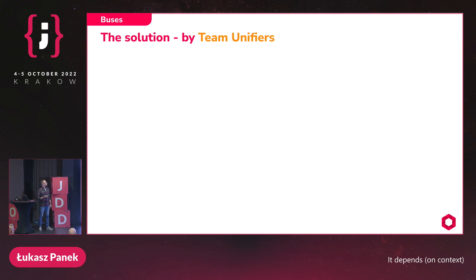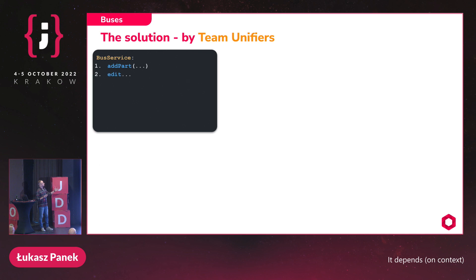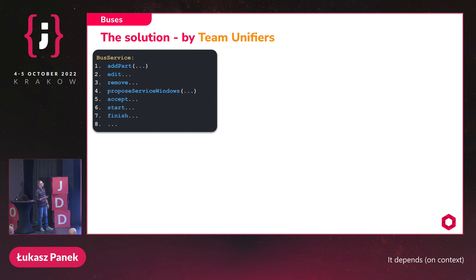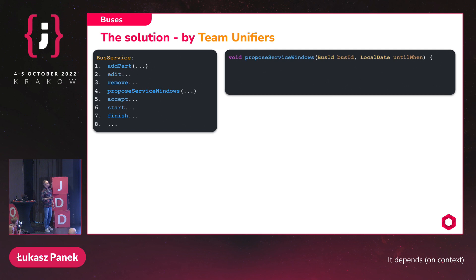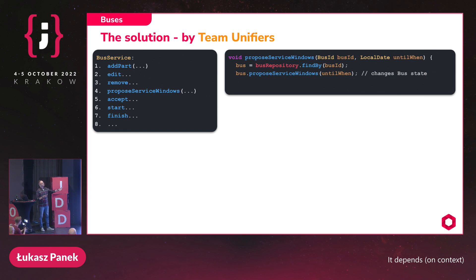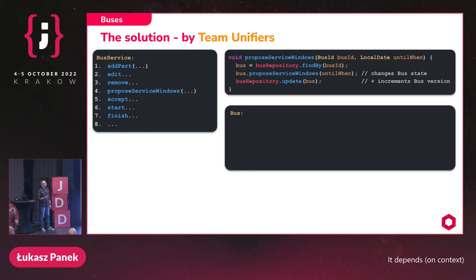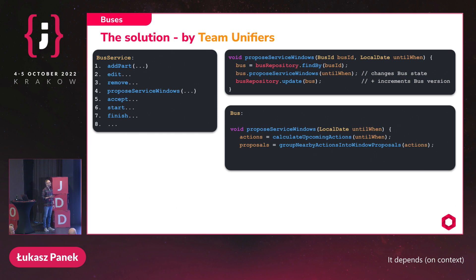The team created a Bus Service with methods mirroring those from the aggregate: add part, edit, remove, propose service windows, accept, start, finish, etc. Looking at the propose service windows method: first we load the bus from the repository, then invoke the command propose service windows — that command changes the bus's internal state — then we persist the change (which updates the version, where the optimistic lock exception can occur). The propose service windows method calculates upcoming actions until a given time, groups nearby actions into window proposals, and adds those proposals to the internal collection of service windows.